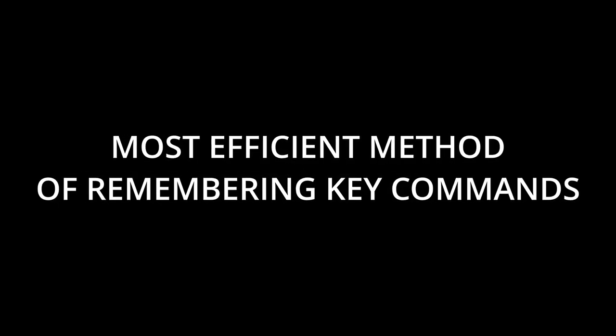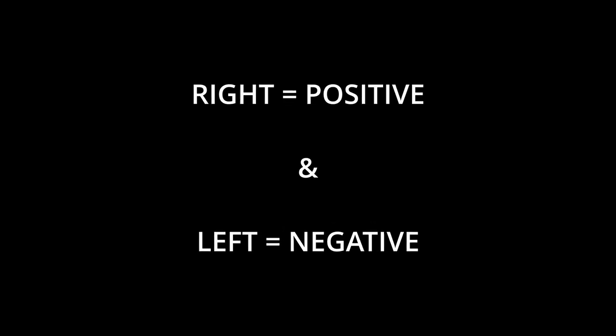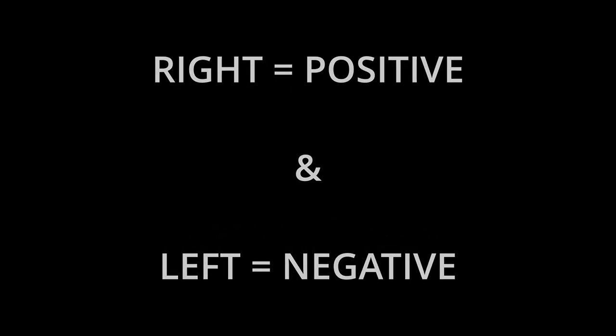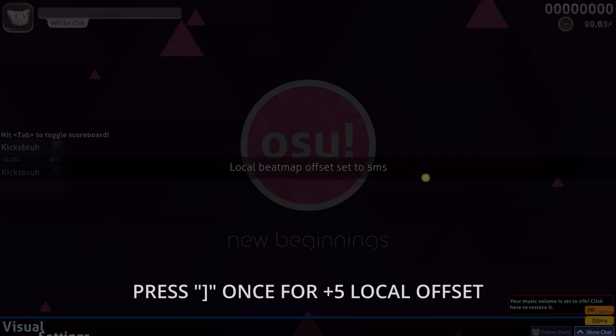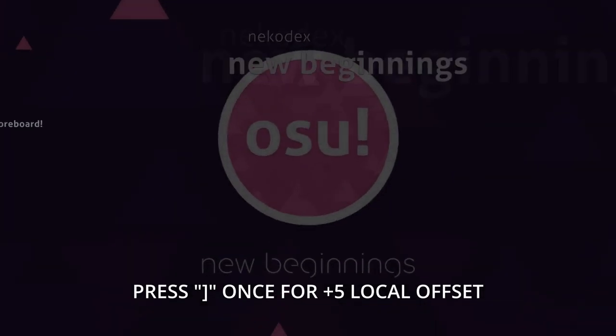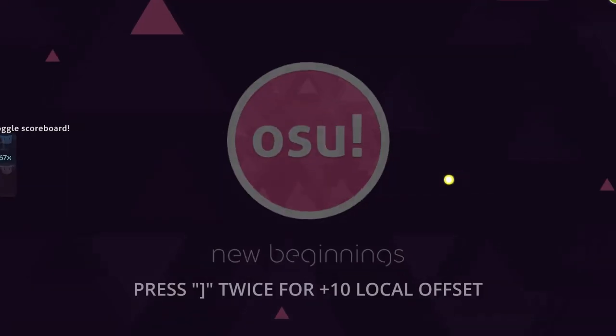For me, this is the most efficient way of remembering which key is responsible for which: the rightmost direction is perceived as the positive direction and vice versa. Thus, to add a positive 5 offset, click on the right square bracket once. To add 10, click on it twice. Each key press will increase the offset value by an interval of plus or minus 5 offset, depending on whether you press the right or the left square bracket.